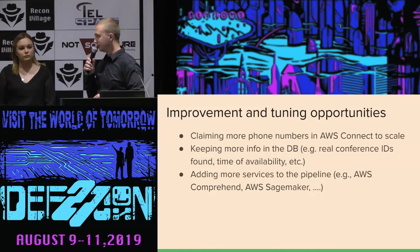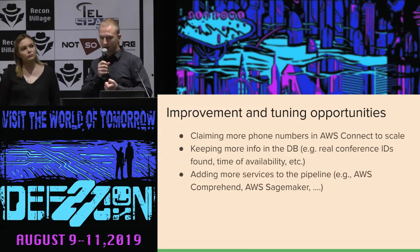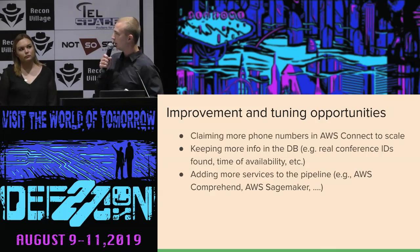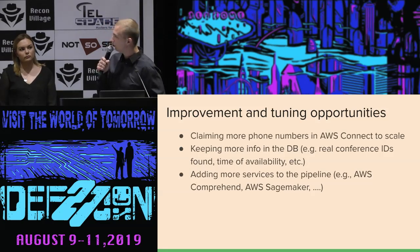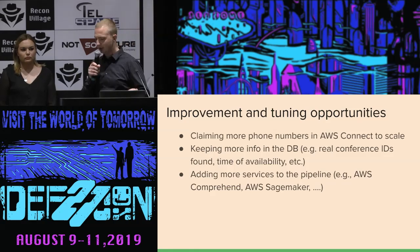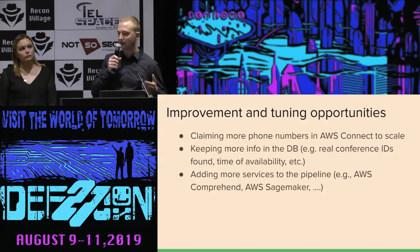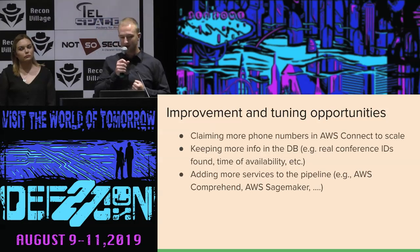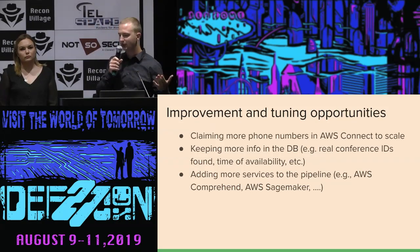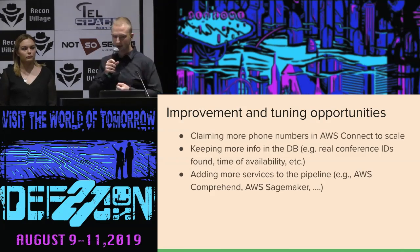Obviously, there are always improvement and tuning opportunities with regards to this project. Since we were only working on this as a POC, we used one phone number. However, you can claim as many as you need in AWS Connect and run your attacks in parallel. Also, it would be useful to keep more information in the database — for example, which conference IDs were actual and real, which meetings you were able to join, maybe how many participants there were. If at some point you identify that the same speaker was present on the same conference ID, you may make an assumption that it was their personal meeting ID. Finally, you can always add more services to the pipeline — for example, AWS Comprehend to get more idea of what the discussion was about, or pass the data to SageMaker where you might have your own machine learning models deployed.